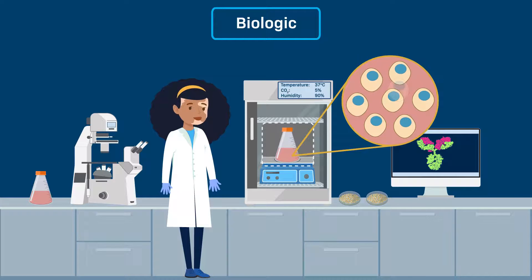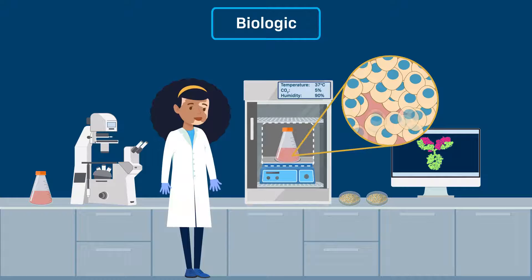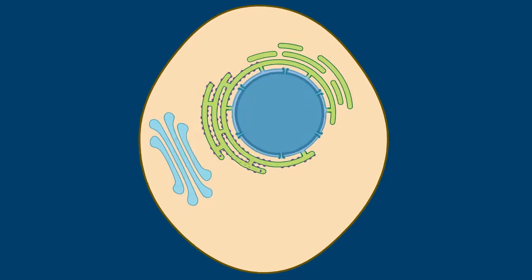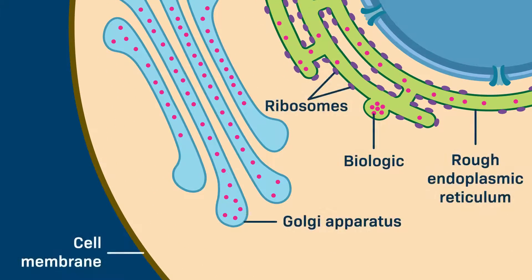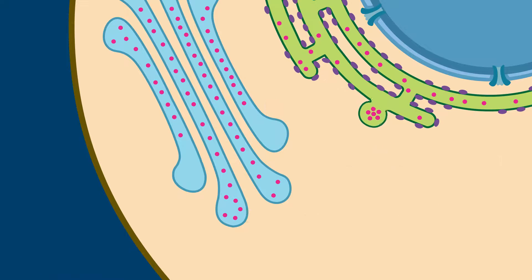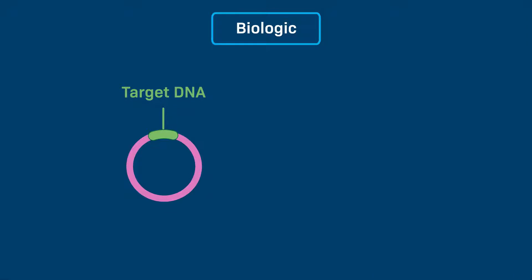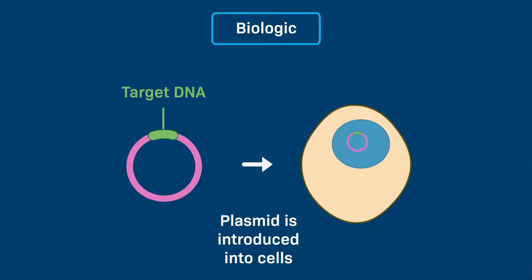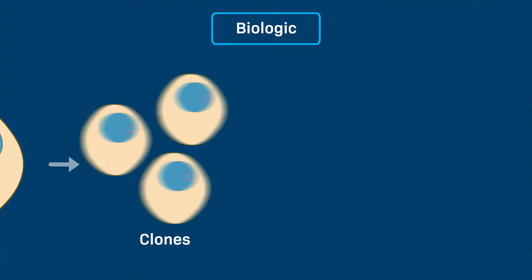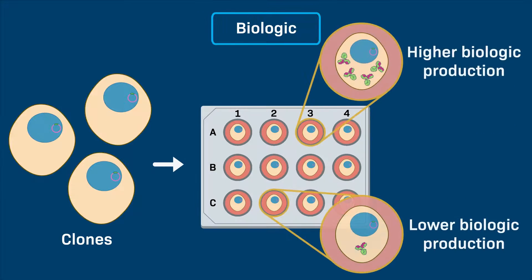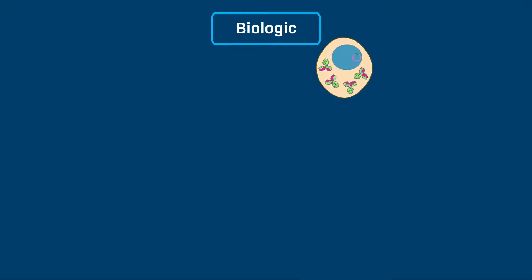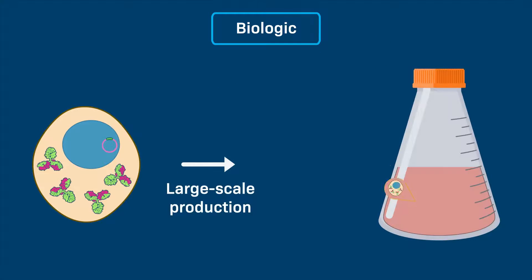To begin, we will learn how the cells are grown in the lab. We will then explore the molecular techniques and cellular attributes that must be considered to express and produce biologics in cells. We will also learn how one particular cell for making a biologic is identified from a large pool and then cloned, and why it is necessary for manufacturers to do this to produce biologics on a large scale.